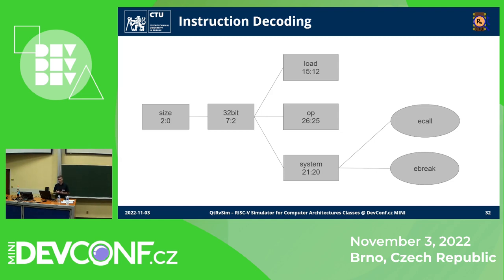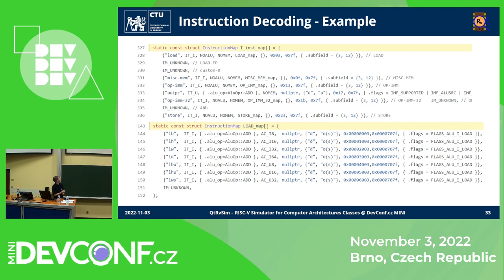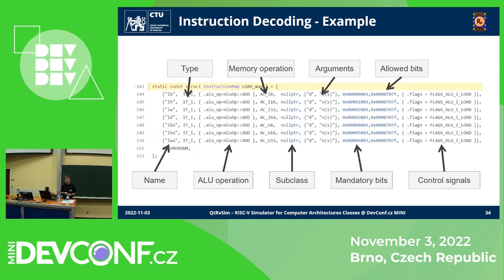To make the simulator easily extensible, it uses a single recursive table for decoding, assembling, disassembling, and syntax highlighting. It is indexed by a portion of the instruction until it reaches the individual instruction. For example, here we have groups of instructions leading to a table with concrete instructions — in this case, load instructions. Going more concrete, we can see name, type, and order of instructions, memory operation, ALU operation, subclass if it's a group, arguments for the assembler, allowed and mandatory bits, and finally control signals.